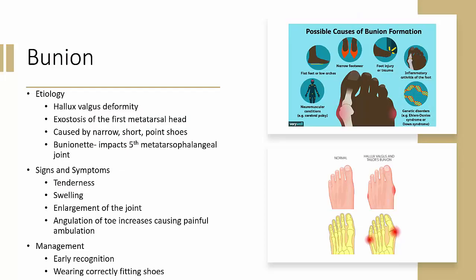Bunions — also known as hallux valgus deformity. The etiology is an exostosis, or bony outgrowth, at the first metatarsal head, associated with forefoot varus. Most commonly, patients develop this from shoes that are too narrow, pointed, or short. The bursa around the joint becomes inflamed and thickens, enlarging the joint and causing lateral malalignment of the great toe. A bunionette, also known as a tailor's bunion, impacts the fifth metatarsophalangeal joint.